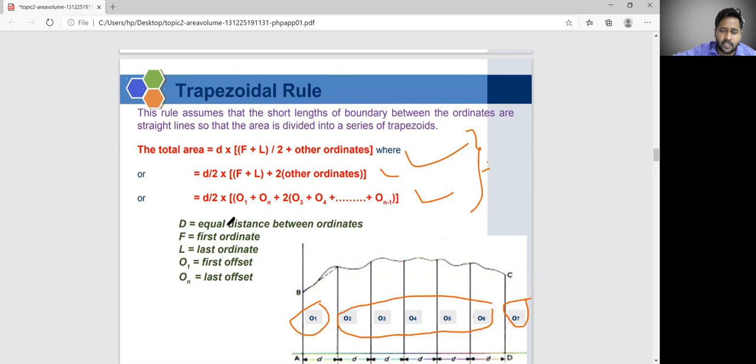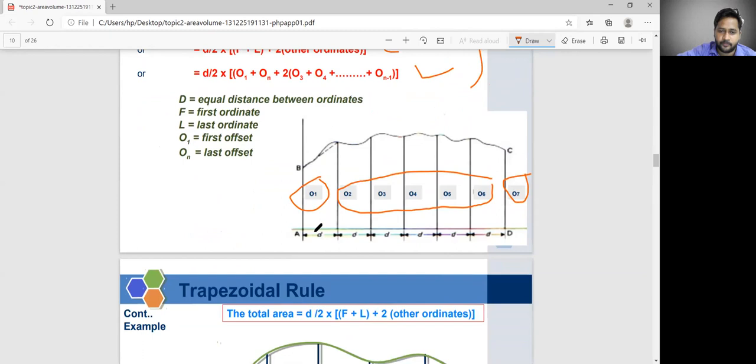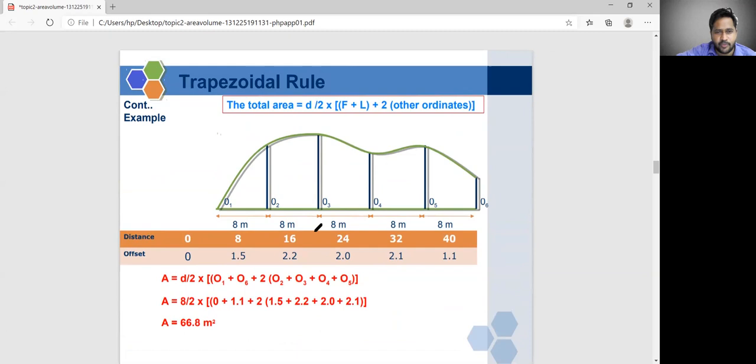D is nothing but equal distance between two ordinates. So, you are showing that these distance nothing but D. And your ordinate, last ordinate O_1, the last offset, you have this ordinate three and five like this, and six like this ordinates given. That is six ordinates.